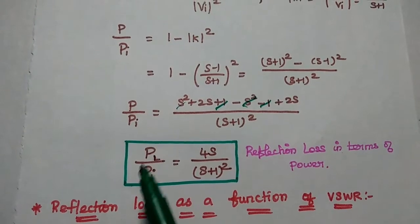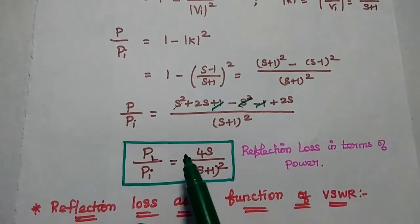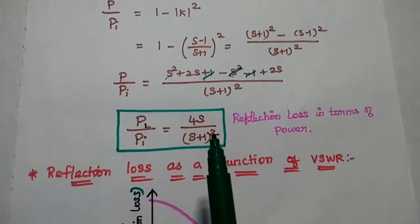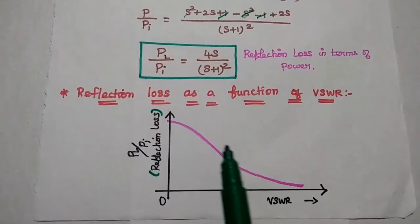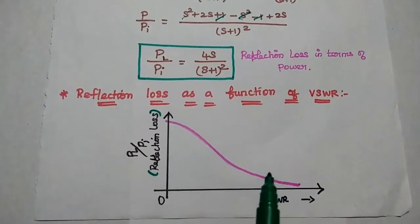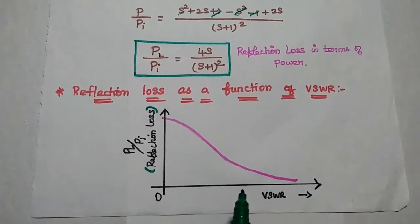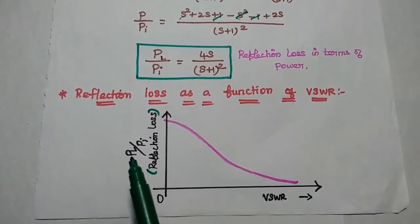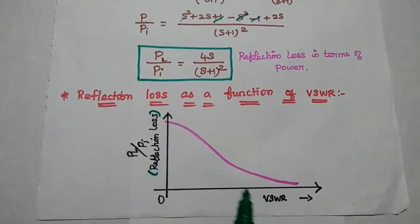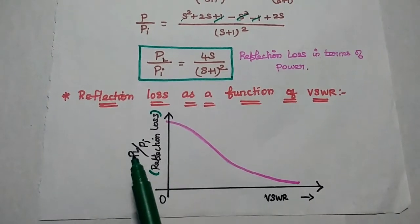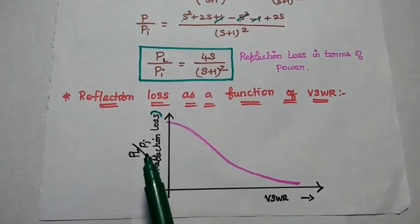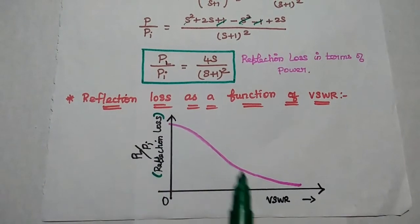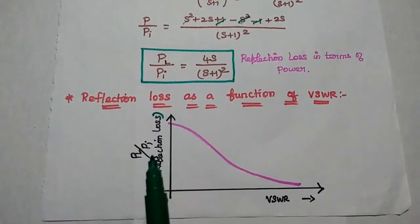Whenever this ratio PL/PI is high, there is a maximum amount of power delivered to the load. We can obtain the reflection loss easily by comparing these values. This diagram represents the reflection loss as a function of VSWR. Whenever the VSWR — the standing wave ratio — is smaller, the power delivered to the load is maximum. If the VSWR value is high, the power delivered to the load is very low. These two are inversely proportional, representing the relation between power delivered to the load and VSWR in terms of reflection loss.